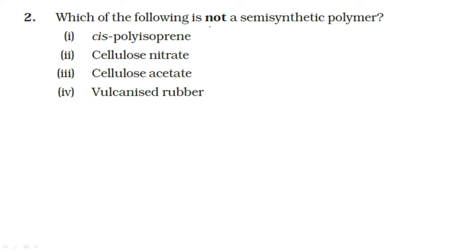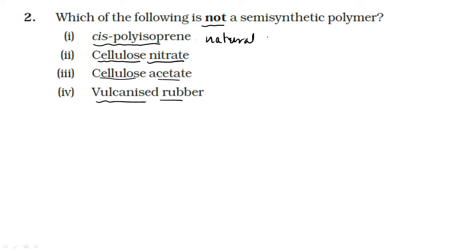Which of the following is not a semi-synthetic polymer? Cellulose is a natural polymer, but cellulose nitrate is semi-synthetic. Cellulose acetate is also semi-synthetic. Vulcanized rubber is semi-synthetic. Cis-polyisoprene is nothing but natural rubber — it is not semi-synthetic, it is natural. So option A is our answer.